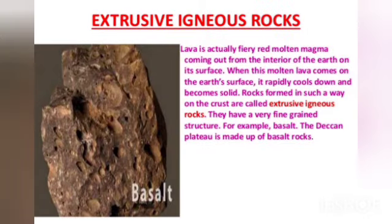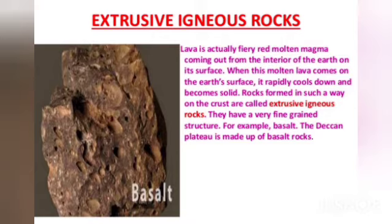Lava is actually fiery red molten magma coming out from the interior of the earth onto its surface. When this molten lava comes on the earth's surface, it rapidly cools down and becomes solid. Rocks thus formed are called extrusive igneous rocks. They have a very fine grained structure. For example, basalt — the Deccan Plateau is made up of basalt rocks, which is an example of extrusive igneous rock.